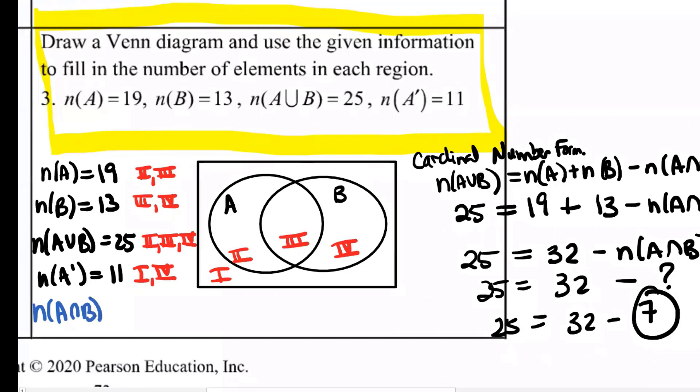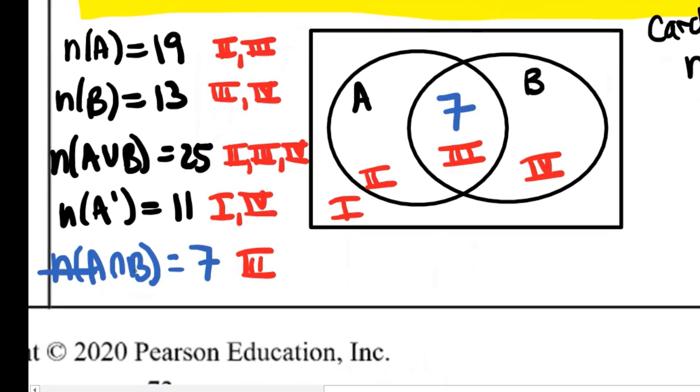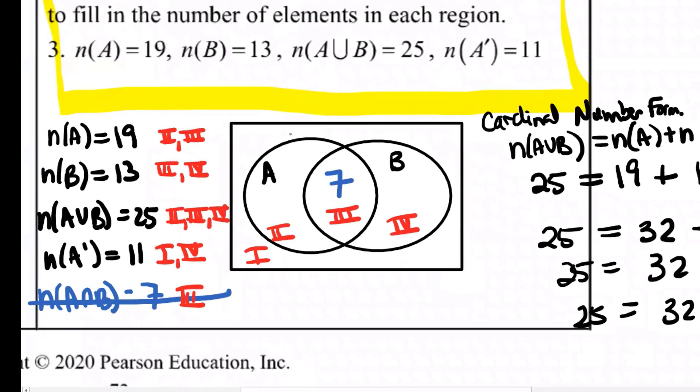So I'm going to write that down as an extra fact that I just figured out here. The number of elements in A intersect B is seven. This is referring to region three. It's describing just one region. So that's good because now I can put on my diagram the number seven and I can cross this fact off my list.